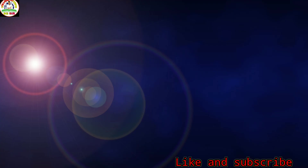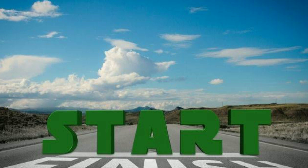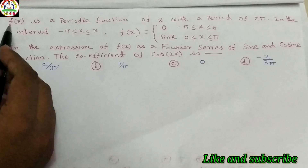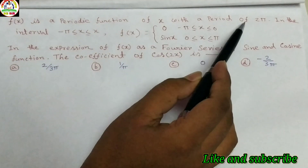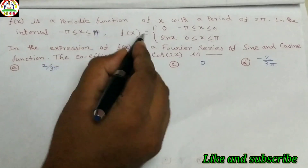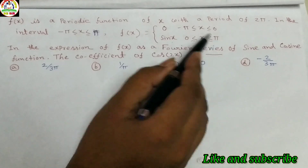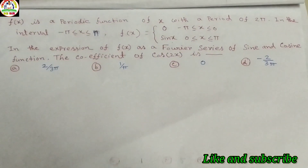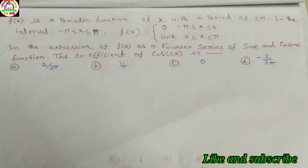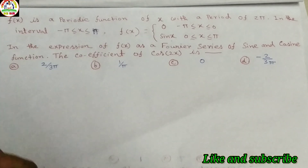Now we discuss some important problems about Fourier series, important for entrance examinations. Problem from IIT JAM: f(x) is a periodic function with period 2π. In the interval −π to +π, f(x) = 0 for −π to 0, and f(x) = sin(x) for 0 to π. In the Fourier series expansion of f(x), the coefficient of cos(2x) is — options: 2/(3π), 1/π, 0, or −2/(3π).